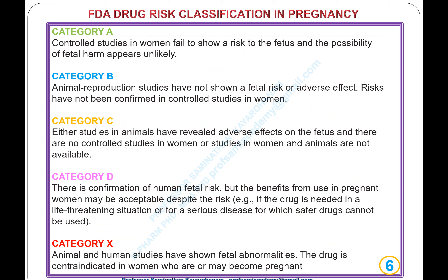FDA drug risk classification in pregnancy. Category A: controlled studies in women fail to show a risk to the fetus and the possibility of fetal harm appears unlikely. Category B: animal reproduction studies have not shown a fetal risk or adverse effect, and risks have not been confirmed in controlled studies in women. Category C: either studies in animals have revealed adverse effects on the fetus and there are no controlled studies in women, or studies in women and animals are not available. Category D: there is confirmation of human fetal risk, but the benefits from use in pregnant women may be acceptable despite the risk — for example, if the drug is needed in a life-threatening situation or for a serious disease for which safer drugs cannot be used. Category X: animal and human studies have shown fetal abnormalities. The drug is contraindicated in women who are or may become pregnant.